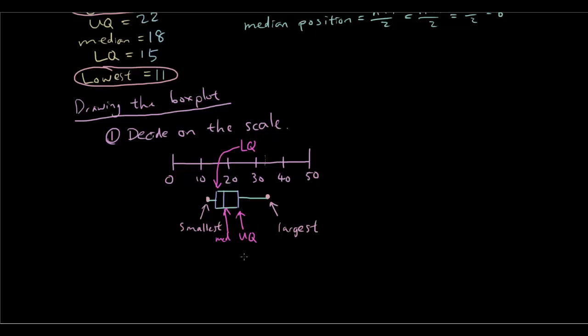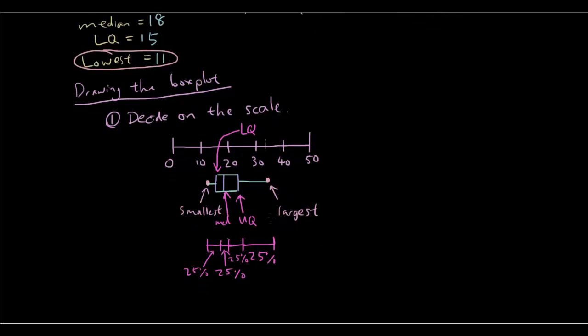So basically, what the quartiles represent is that 25% of the data is between the highest number and the upper quartile. Another 25% of the data is between the upper quartile and the median. Another 25% of the data is between the median and the lower quartile. And the last 25% of the data is between the lower quartile and the smallest number. So that is the concept of quartiles. So you can see that our highest quarter between the largest number and the upper quartile has a bigger range compared to, for example, the smallest, the lowest quartile between the lower quartile and the smallest number.